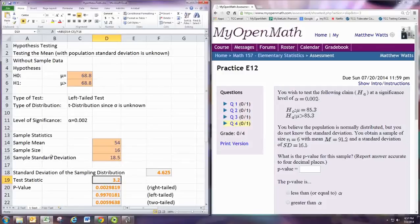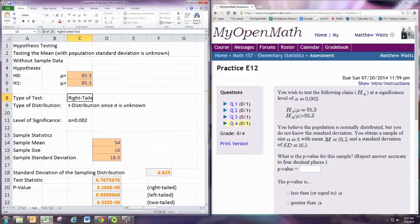We'll be using the t-distribution since we do not know the population standard deviation. Put the hypothesized mean value in the hypotheses. This corresponds to a right-tailed test. And alpha is 0.002.